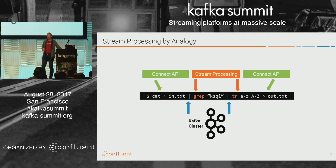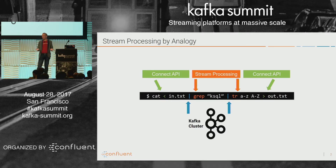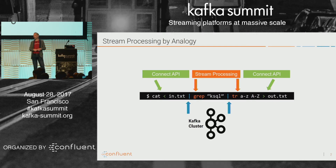What happens in the middle is the interesting part. This is where we have our processes that take one or more streams of data, operate on them — which is essentially a transformation — and pass it through a topic to the next transformation, and so on through some arbitrary chain of processing. That's really what we mean when we talk about stream processing.